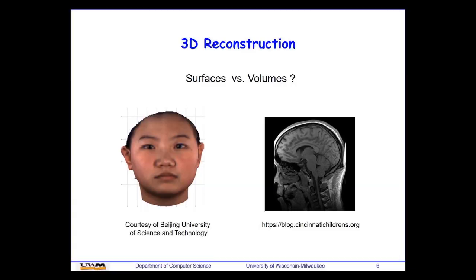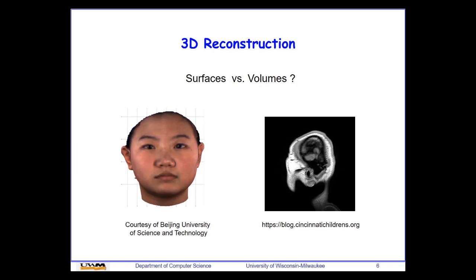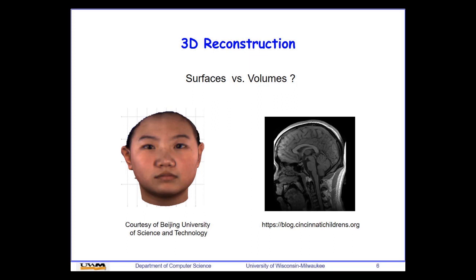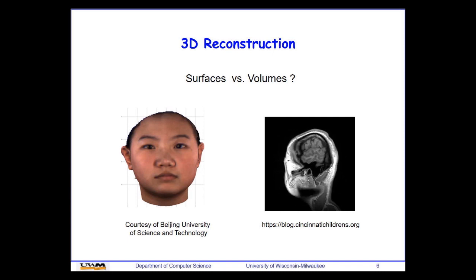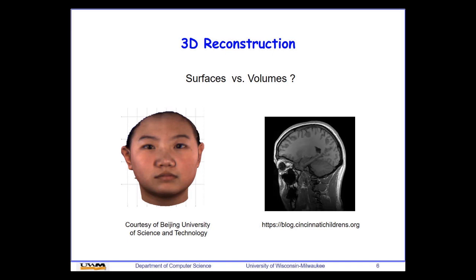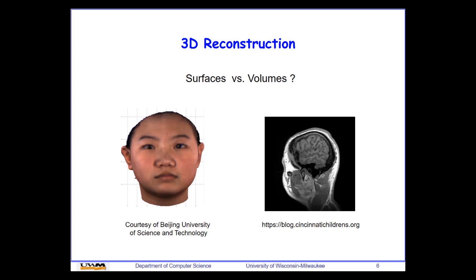Now I'll start with the first question: how do we reconstruct 3D models from 2D images? We have two sub-problems. We can do surface reconstruction — where we only see the surface detail, either the geometry or texture — or volumetric reconstruction, where we can see through the surface and see internal structures. This depends on the application and the imaging rays being used.